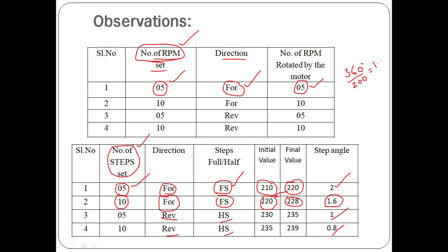For full step it should be exactly 1.8 degrees, and for half step it should be 0.9 degrees. However, instead of 1.8 we got 2 degrees, and instead of 1.8 we got 1.6 — due to some practical disturbances. Even though we set a finite number of steps, the step angle is not exactly as expected due to errors. That is what you have to observe and record.